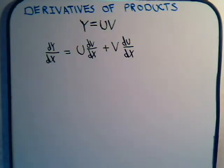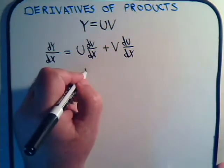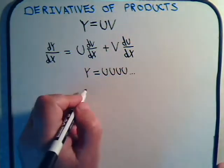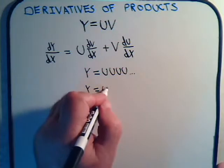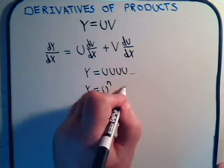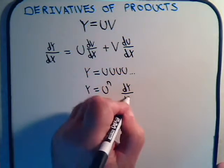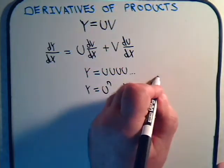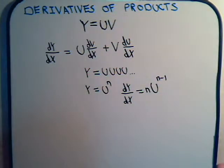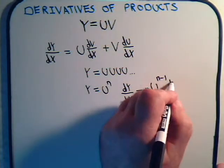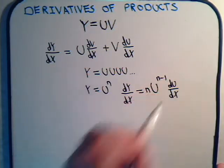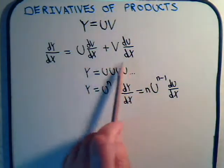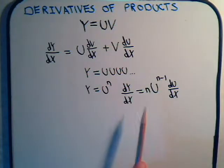We also want to point out a corollary of this: if y is equal to one function multiplied together a bunch of times — say y equals u to the n — then dy/dx is found by bringing the n down, multiplied by u to the n minus one power, and then multiplied by the derivative of u with respect to x. Now we have some problems where we have to use both of these formulas together.